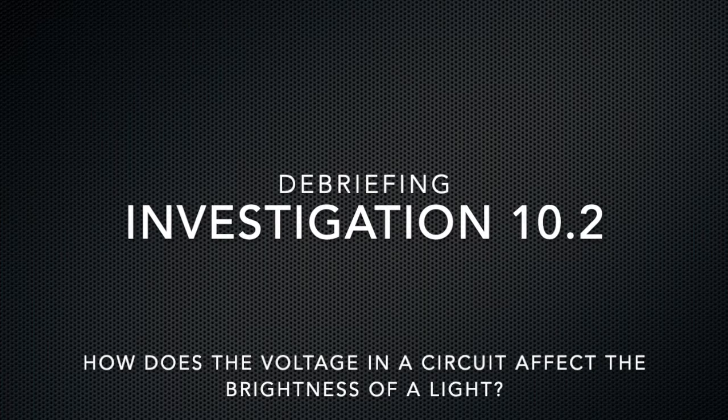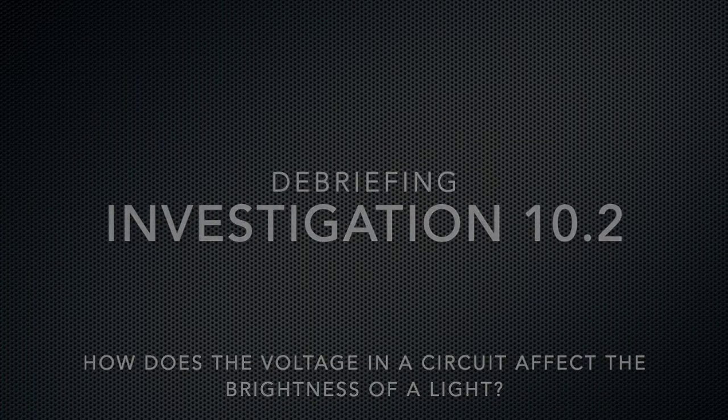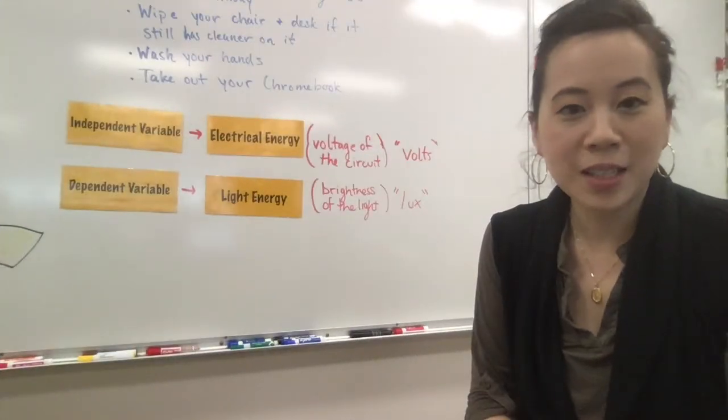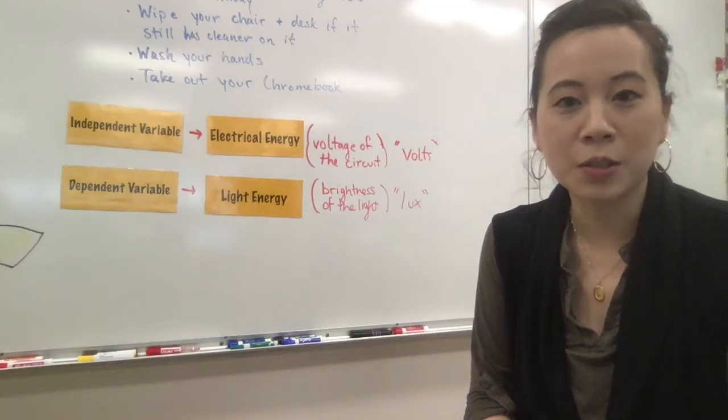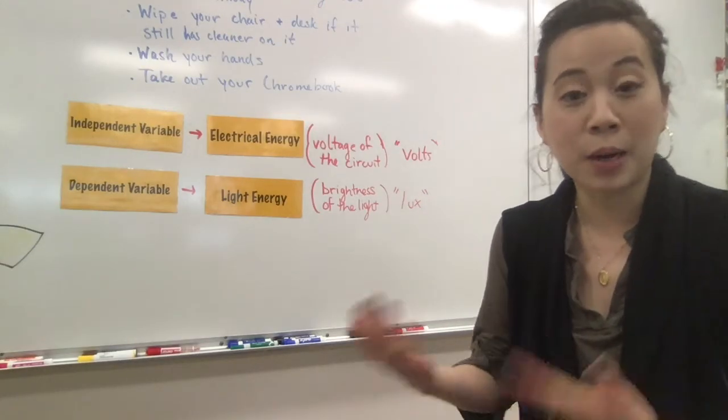Debriefing, investigation 10.2. How does the voltage in a circuit affect the brightness of a light? So for investigation 10.2, you're trying to understand how does the voltage in a circuit affect the brightness of a light.